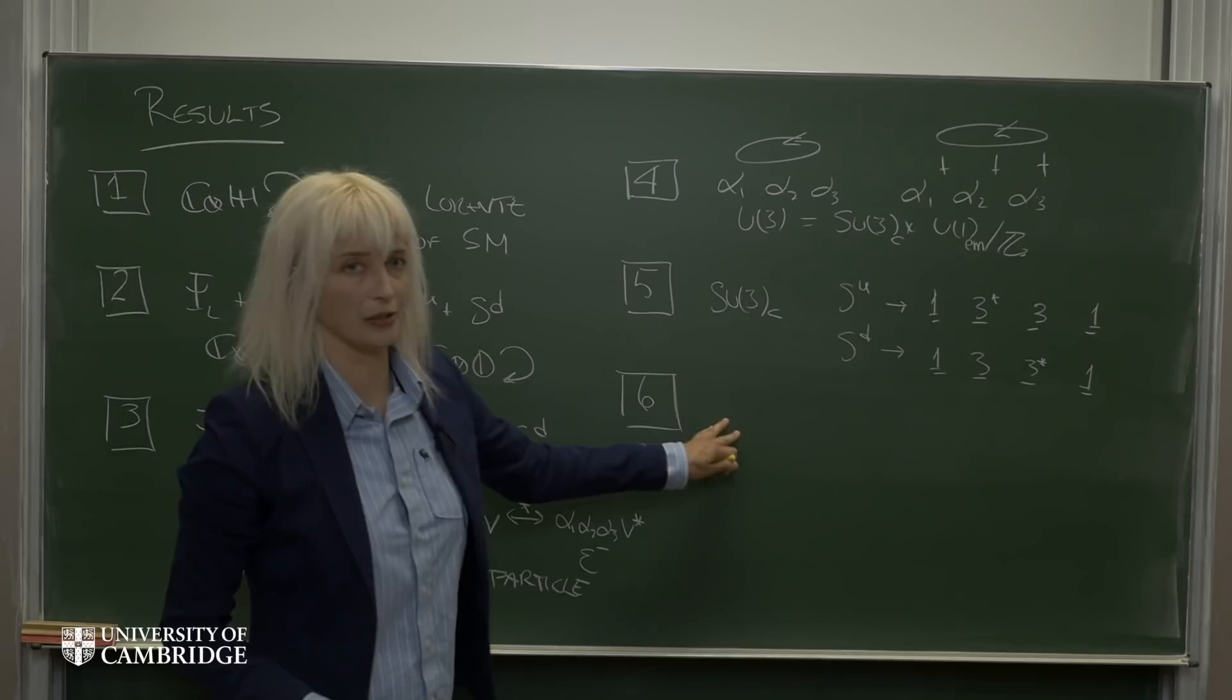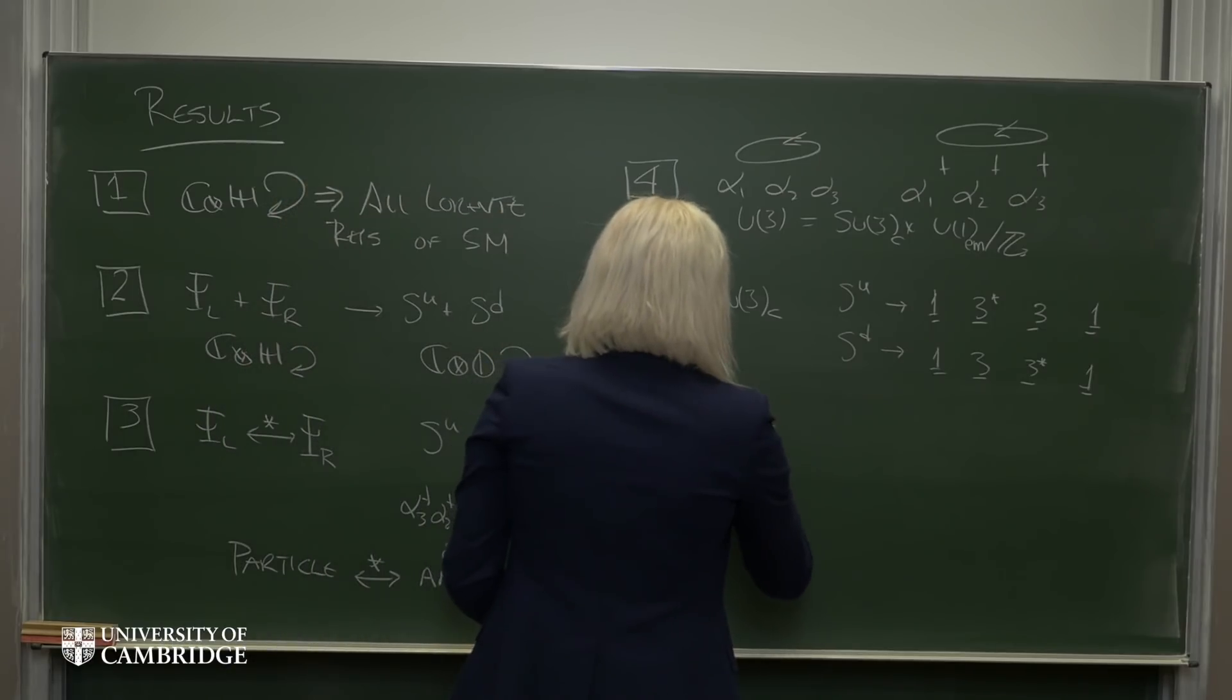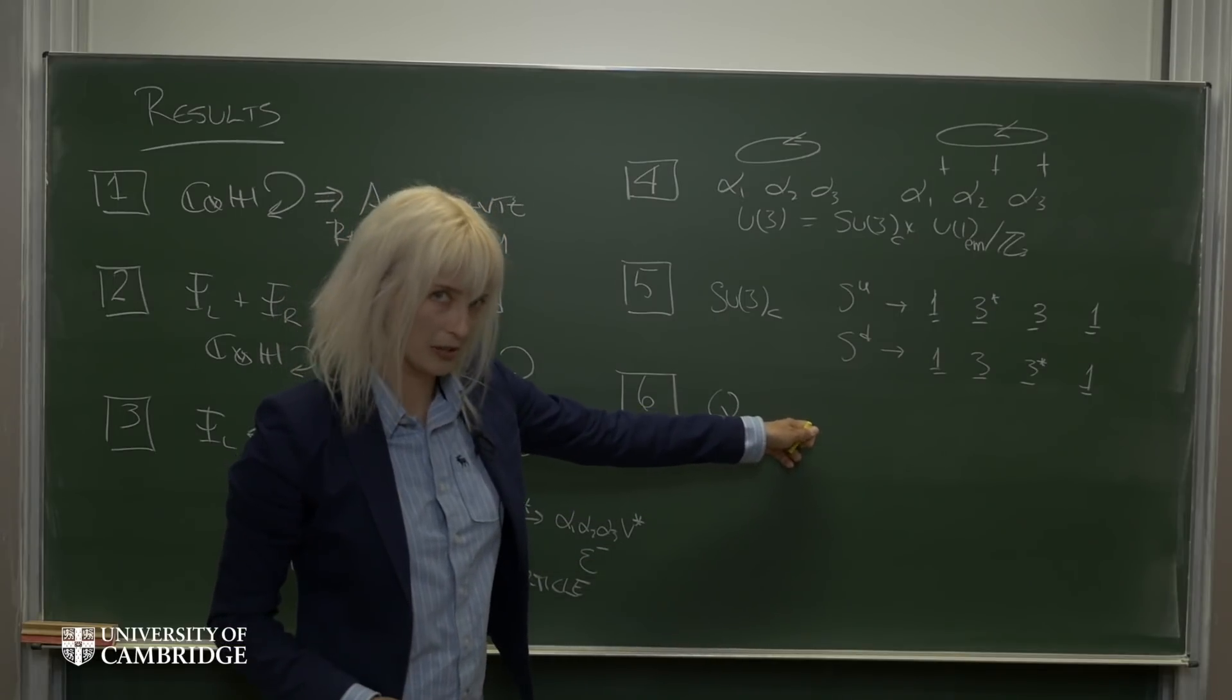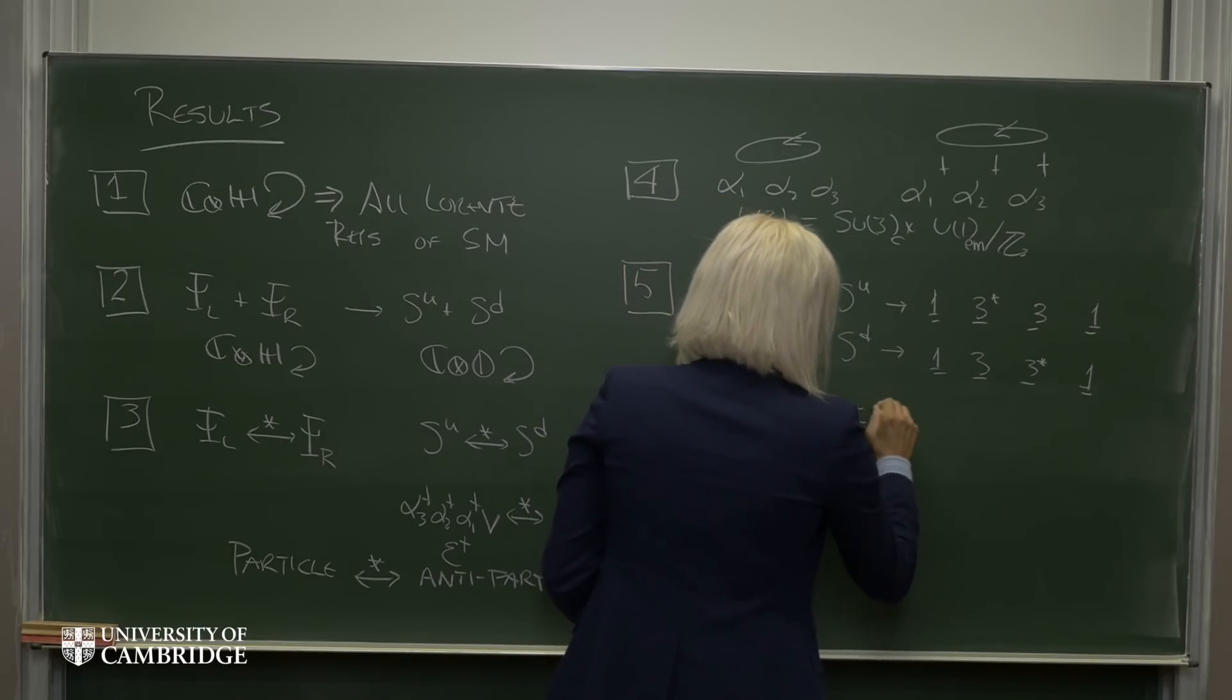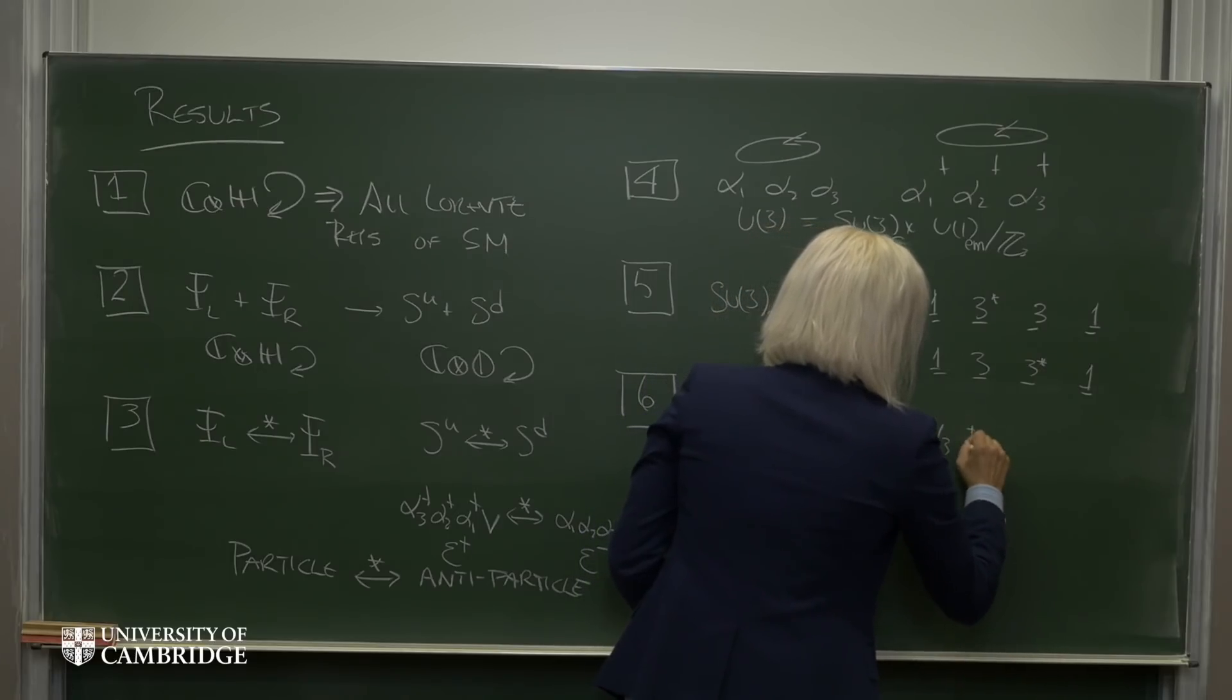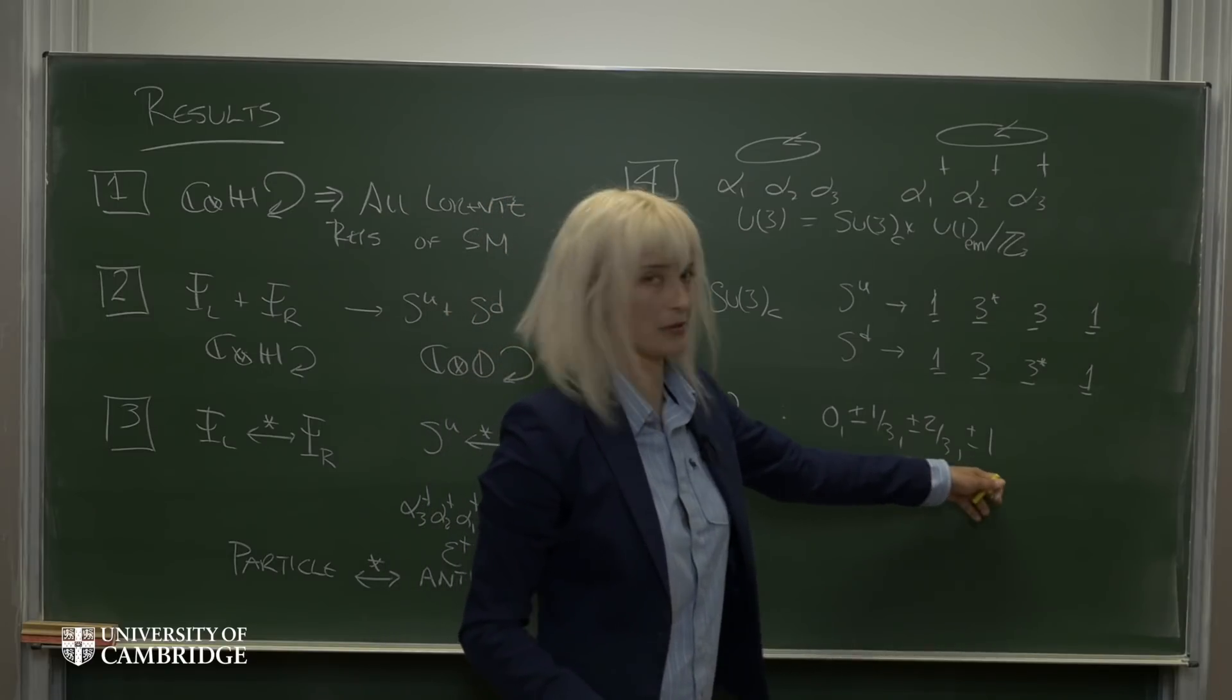And finally, we were able to introduce a new electric charge operator, Q. So, this Q gave us the correct charges we would expect for one generation. So in other words, 0, plus or minus 1 third, plus or minus 2 thirds, and plus or minus 1.